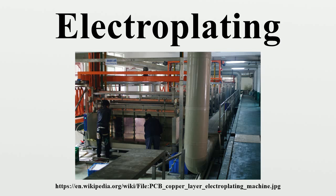Cleanliness is essential to successful electroplating, since molecular layers of oil can prevent adhesion of the coating. ASTM B322 is a standard guide for cleaning metals prior to electroplating. Cleaning processes include solvent cleaning, hot alkaline detergent cleaning, electro cleaning, and acid treatment.